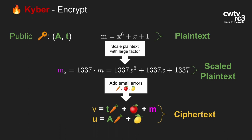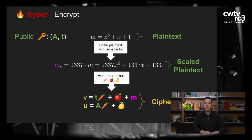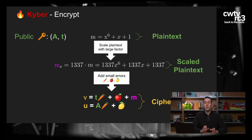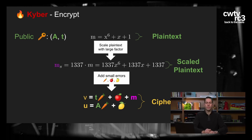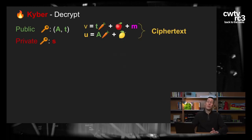Wir haben einen Fehlerterm mit kleinen Fehlerwerten, die wir mit Emojis darstellen. Der verschlüsselte Text besteht aus zwei Werten: V, ein Polynom, und U, ein Vektor von Polynomen. V ist der Schlüsselwert des öffentlichen Schlüssels, den wir bekommen haben, mit den Fehlerwerten – und die Nachricht wird dort auch addiert. U ist die Matrix vom öffentlichen Schlüssel, auch multipliziert mit einem Fehlerwert und einem weiteren Fehlervektor. V und U zusammen bilden den verschlüsselten Wert.